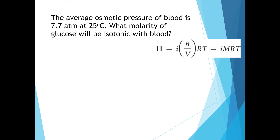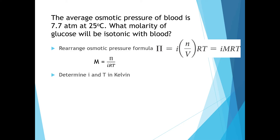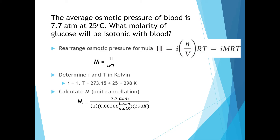We're going to calculate the molarity of glucose in a solution that will allow it to be isotonic with blood. We know blood's osmotic pressure and the temperature at which it's measured. We rearrange our osmotic pressure formula to solve for molarity. Because glucose is a covalent compound, its van't Hoff factor is 1, and the temperature converted to Kelvin is 298 K. We plug in osmotic pressure of 7.7 atmospheres in the numerator and the van't Hoff factor, R constant, and temperature in the denominator. Atmospheres and Kelvin cancel, leaving moles per liter as molarity. The concentration of glucose needed to be isotonic with blood is 0.31 molar.